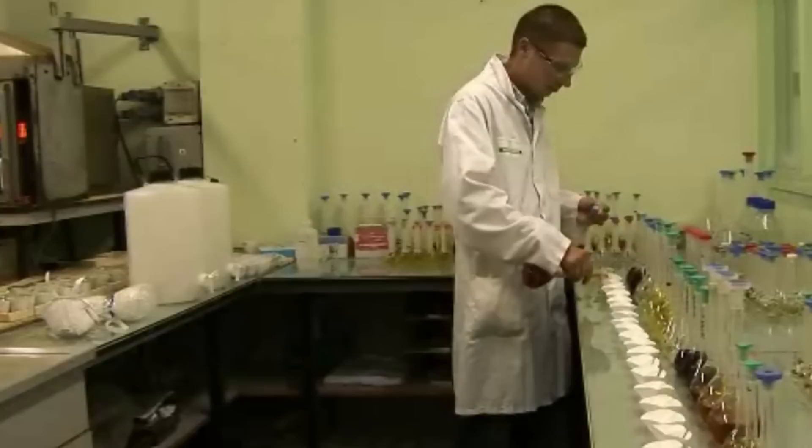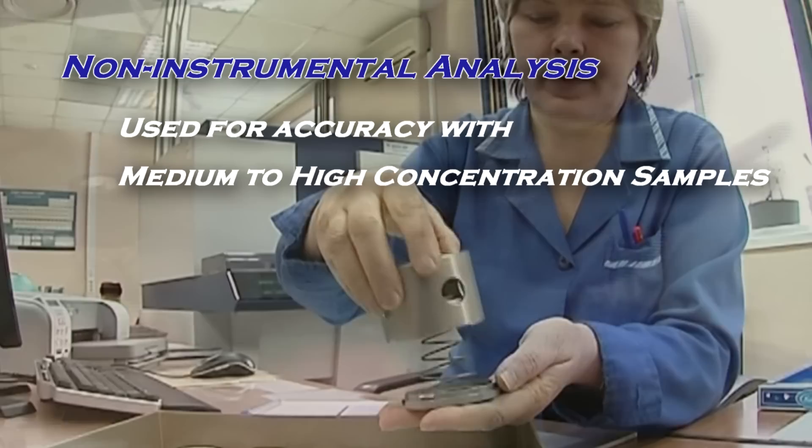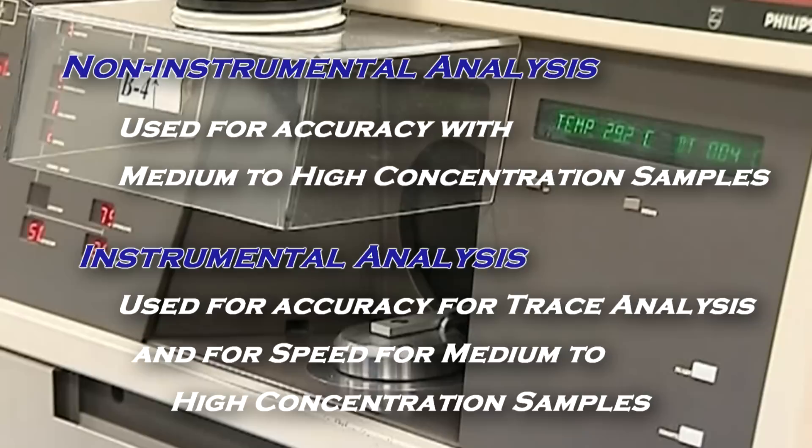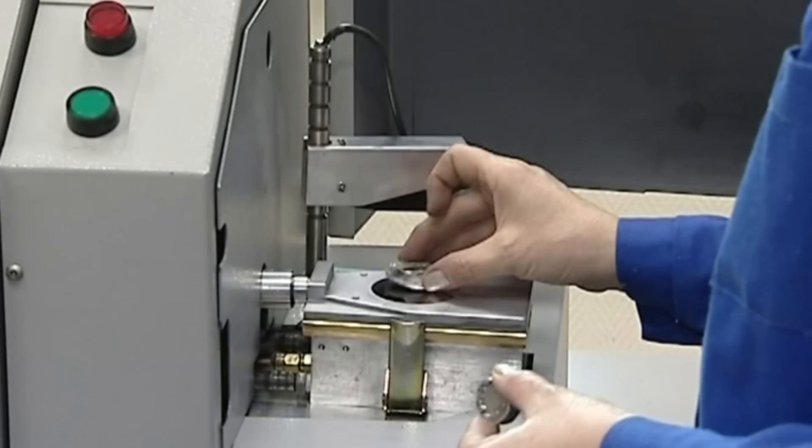Non-instrumental analysis, or chemical analysis, produces highly accurate results for medium to high concentration samples. Instrumental analysis reduces the need for extensive chemical separations to produce quicker results and is superior for trace analysis. There are multiple types of instrumental analysis used and a virtual alphabet soup of acronyms used to describe them.